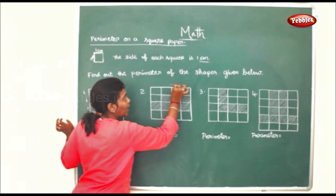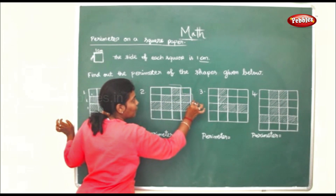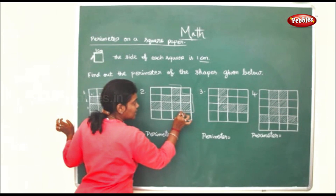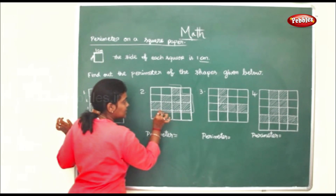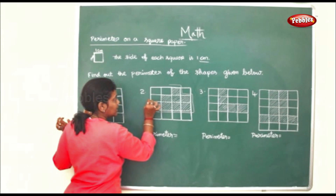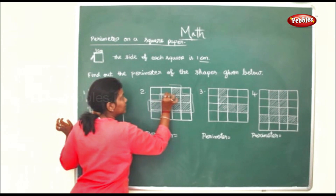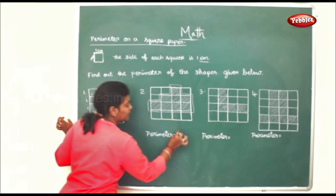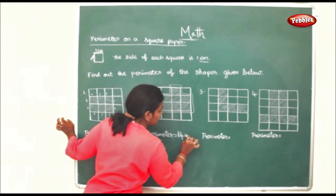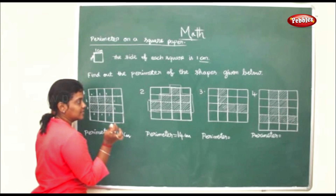Another easy way to calculate is by drawing lines along the sides and counting: 1, 2, 3, 4, 5, 6, 7, 8, 9, 10, 11, 12, 13, 14. You can do it either way — counting each side unit or marking lines as you go.